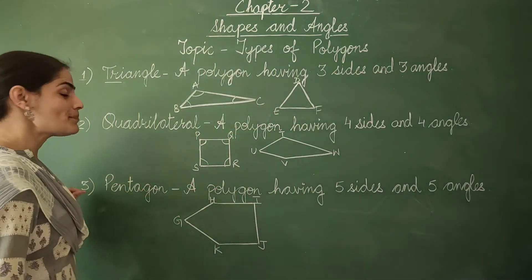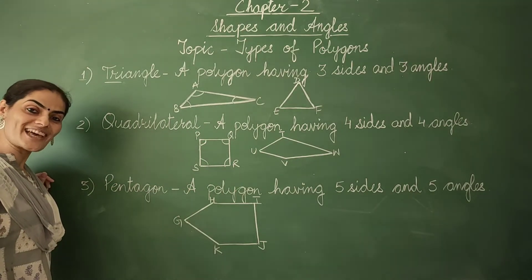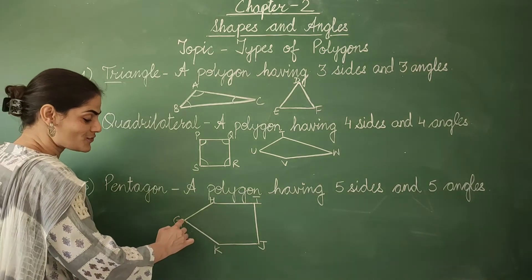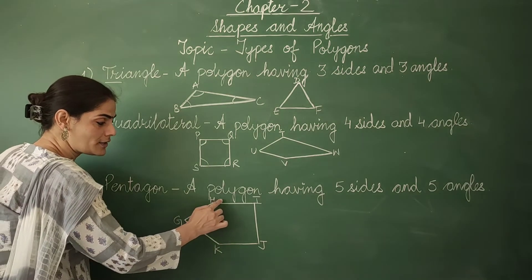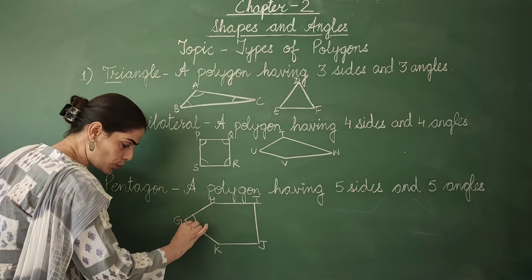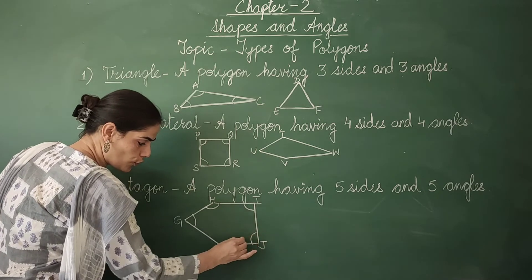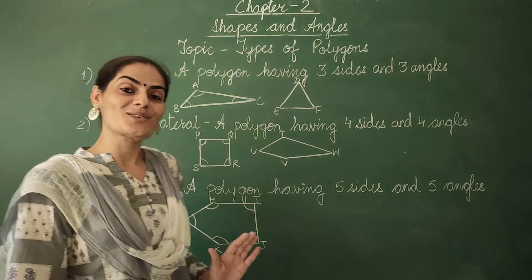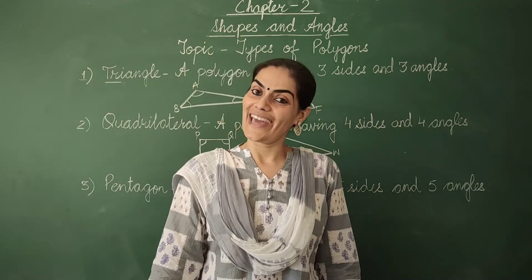Next one is a pentagon. A polygon having five sides and five angles. Look at this figure G, H, I, J, K — it has five sides and five angles. So a pentagon is a polygon having five sides and five angles.